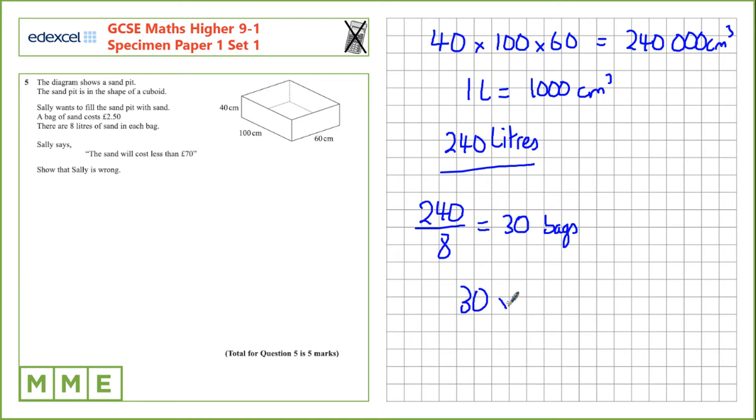If we need 30 bags, at £2.50 a bag, that's 30 times £2.50. £75, so Sally is wrong.